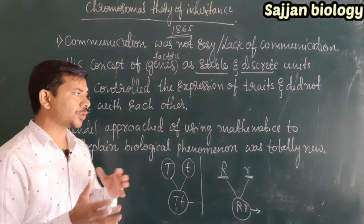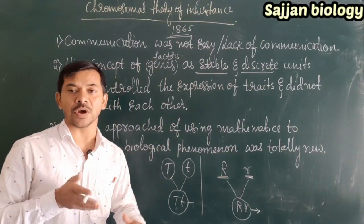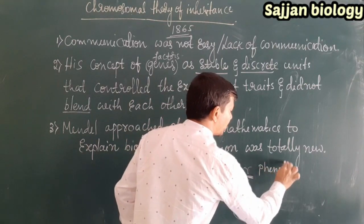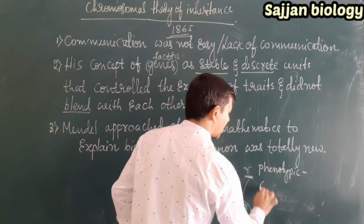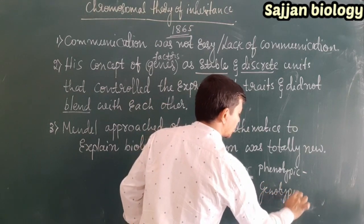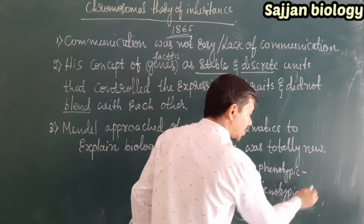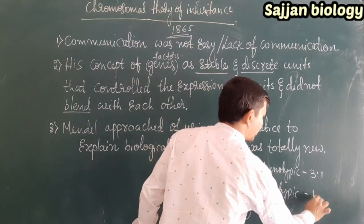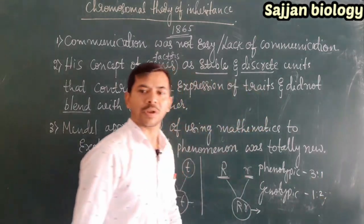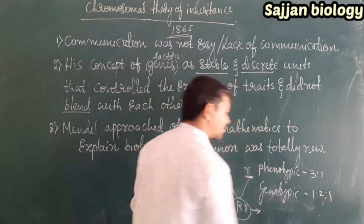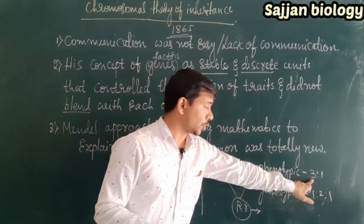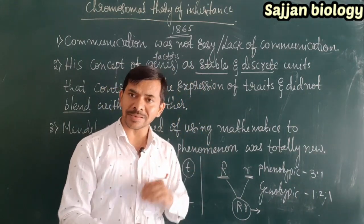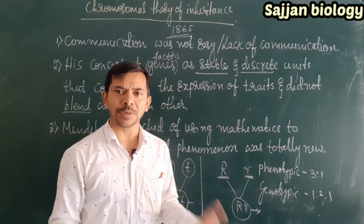The third reason is that Mendel used mathematics to explain a biological phenomenon. The phenotypic and genotypic ratios — for example, the phenotypic monohybrid cross ratio is 3:1, and the genotypic ratio is 1:2:1. This use of mathematics to explain biological ratios was completely new at that time, and hence scientists did not accept his discoveries on the laws of inheritance.